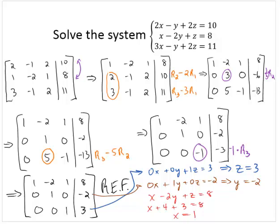So therefore, the solution of the system is the ordered triple, 1, negative 2, 3.